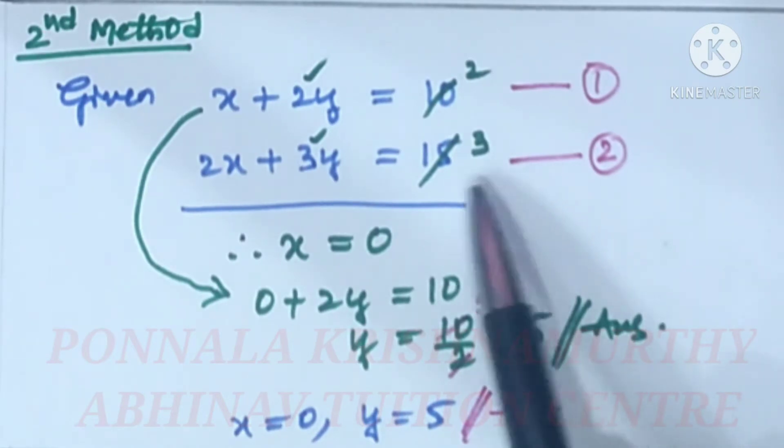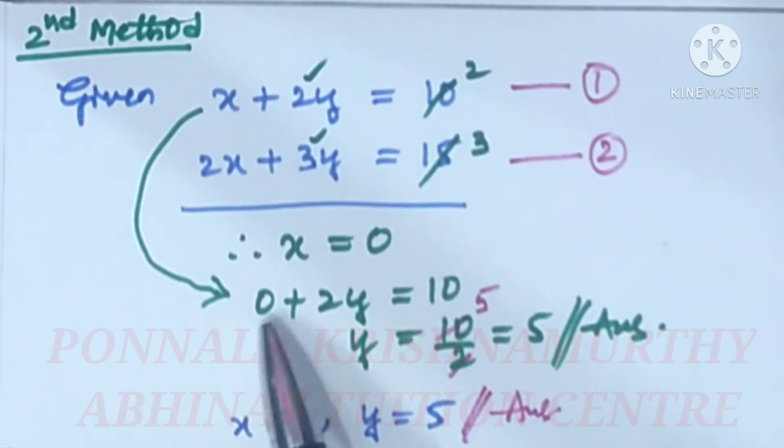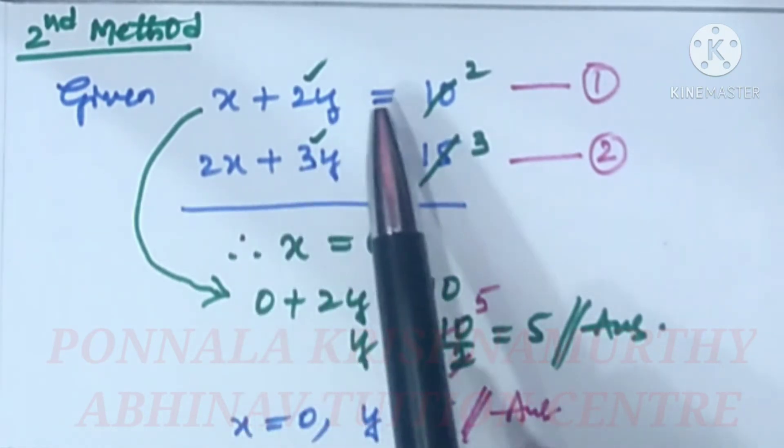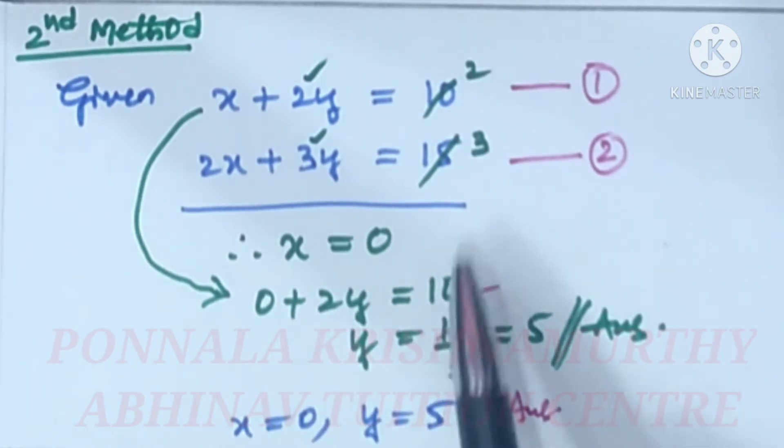In such a case, x is always 0. Then substituting x value in place of x in the equation 1, 0 plus 2y equal to 10.